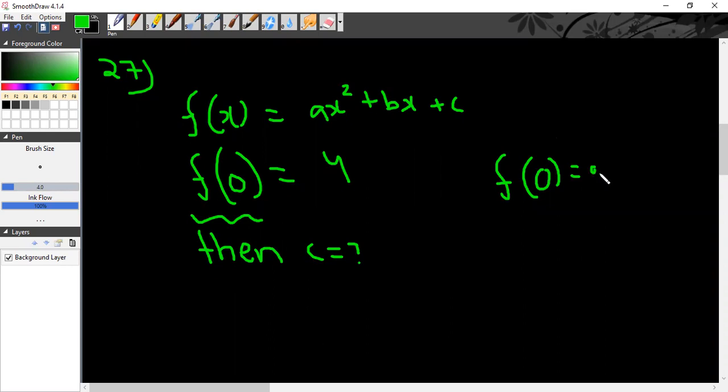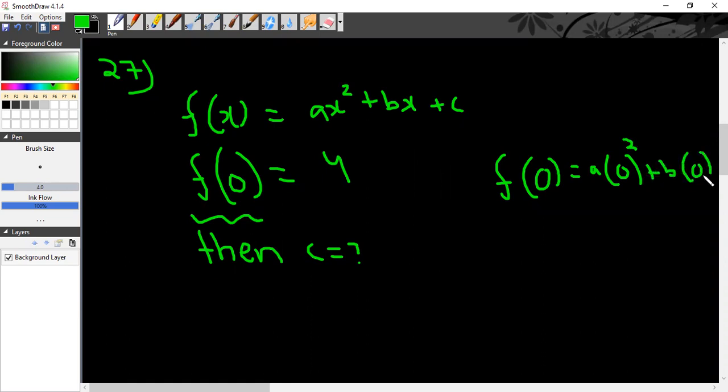So, a into 0 square plus b into 0 plus c.